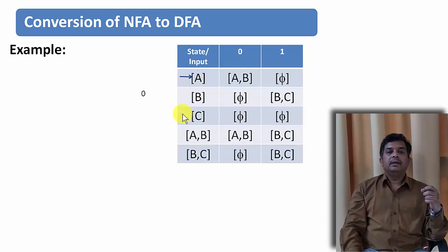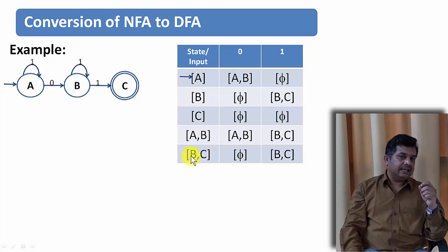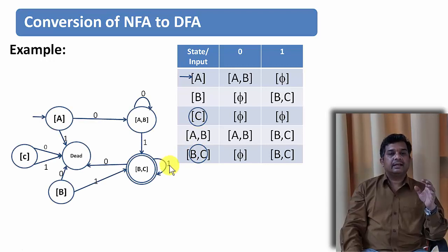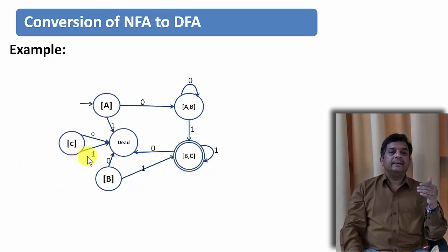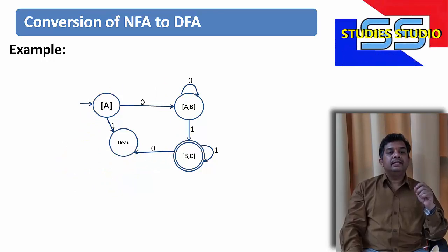If we put all of them in a transition table it will look like this. In the original problem, C used to be the final state. So wherever C appears in the DFA states, that will be a final state. C appears in single [C] and in [BC], so these two become the final states. If you draw the transition diagram, it will look like this. But you can see there are a few states which are not reachable — we can eliminate them. State C is not reachable from the starting state, and state B is also not reachable. So we eliminate these two states. This is the required DFA for the problem.